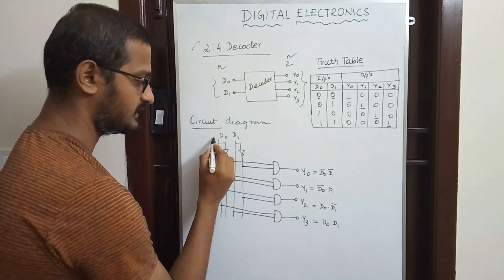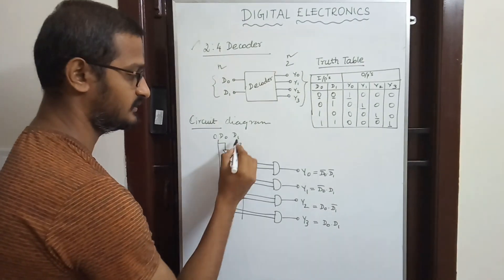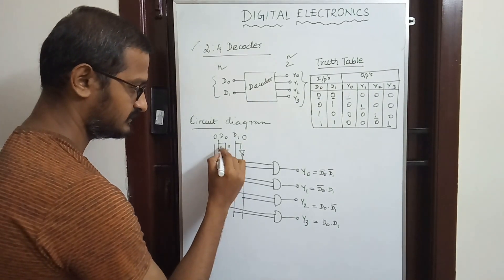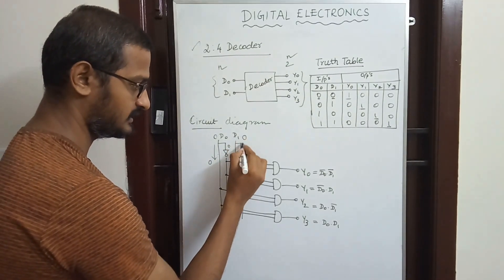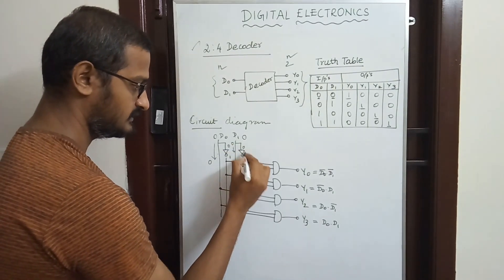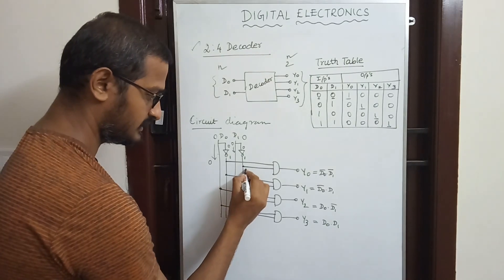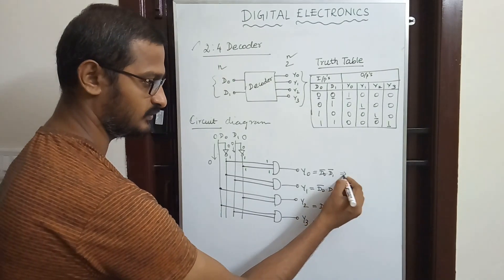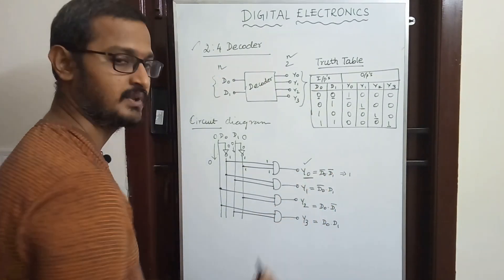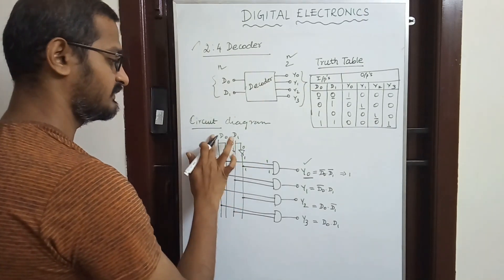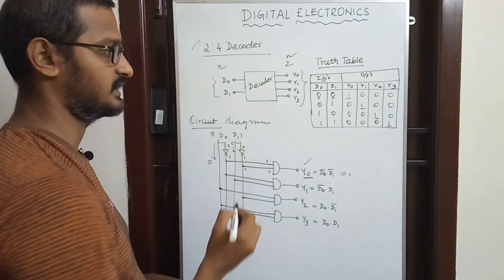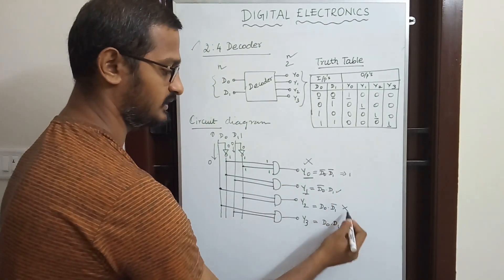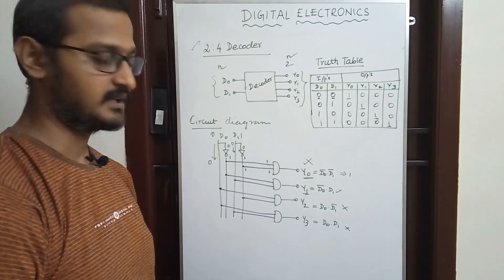When D0 is 0 and D1 is 0, looking at this line, if we multiply them we get 0. However after passing through inverters, 1 multiplied by 1 gives us 1. So we get the output. The outputs Y0, Y1, Y2, and Y3 are produced accordingly based on the input combinations.